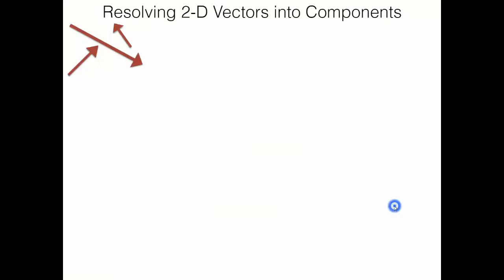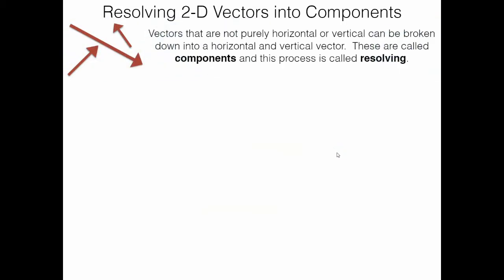These vectors are at an angle — how do we deal with that? There are all different combinations; it seems like an infinite array of possibilities for the way these vectors could look. There are ways to resolve them into components. This process breaks down a single vector at an angle into a horizontal and vertical vector that make it up. These horizontal and vertical vectors are called components, and the process of getting them is called resolving.